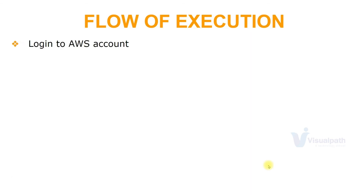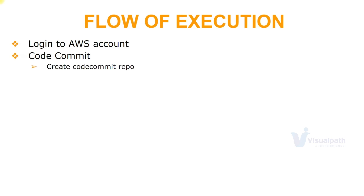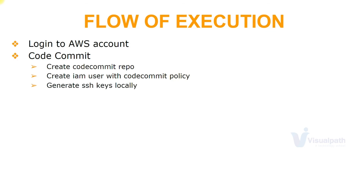First we'll set up everything on AWS. We'll log into the AWS account, go to the CodeCommit service, and create a CodeCommit repository. We'll create an IAM user with a CodeCommit policy, which will have privileges to access this CodeCommit repository. Locally on our machine we are going to generate SSH keys and do SSH-based login to this code repository. We'll exchange the keys with the IAM user that we created to set up authentication to our CodeCommit repository.